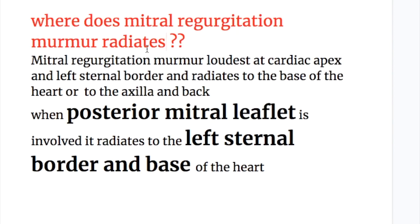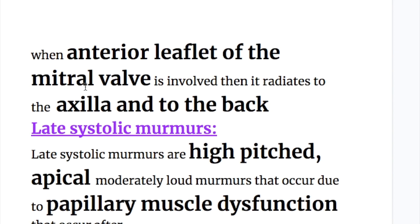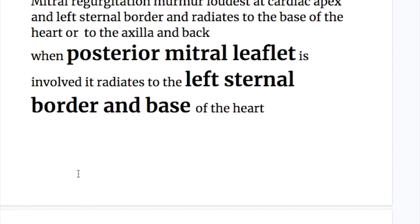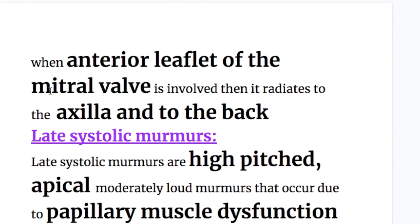Mitral regurgitation murmur is loudest at the cardiac apex and left sternal border and radiates to the base of the heart, or to the axilla and back. When the posterior mitral leaflet is involved, it radiates to the left sternal border and to the base of the heart. When the anterior leaflet of the mitral valve is involved, it radiates to the axilla and to the back.